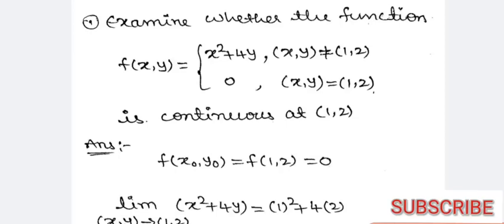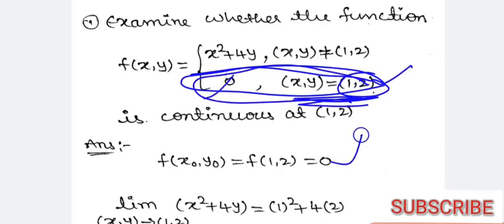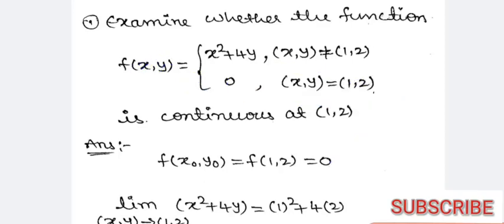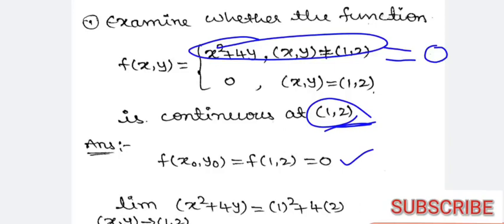First, we have to find f(x₀, y₀), that is f(1, 2). The value of f(1, 2) is 0, because when (x, y) = (1, 2), the answer is 0. Now we have to find the limit as (x, y) → (1, 2) of this function. If we also get 0 as the limit, then we can say the function is continuous at (1, 2).